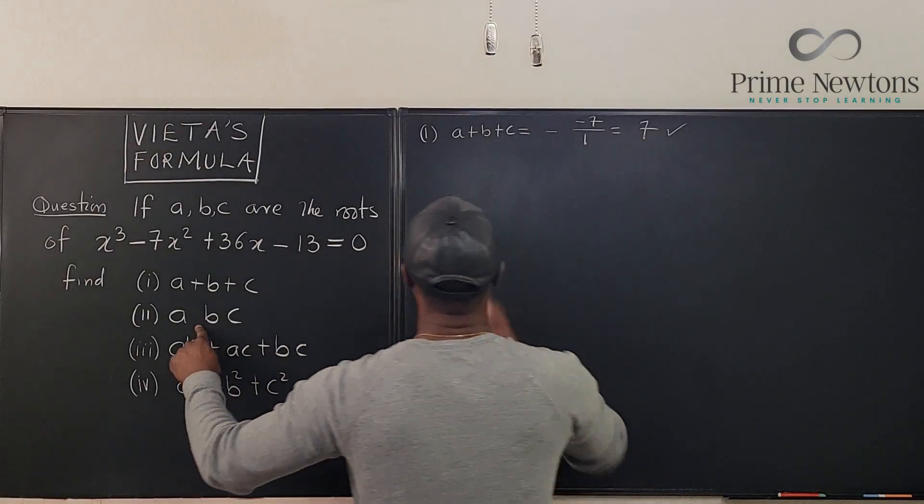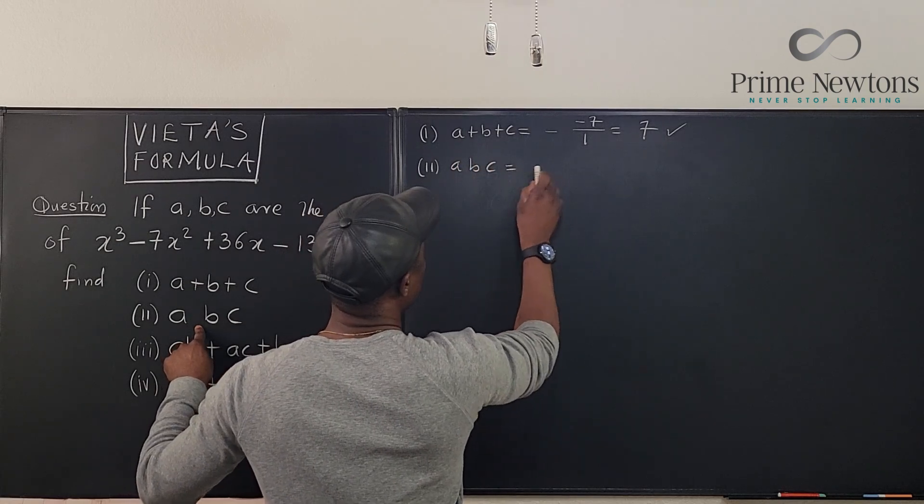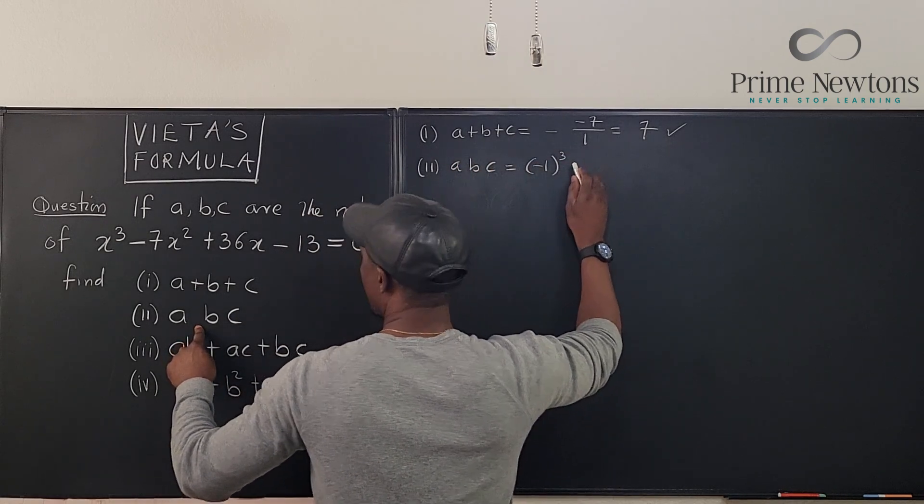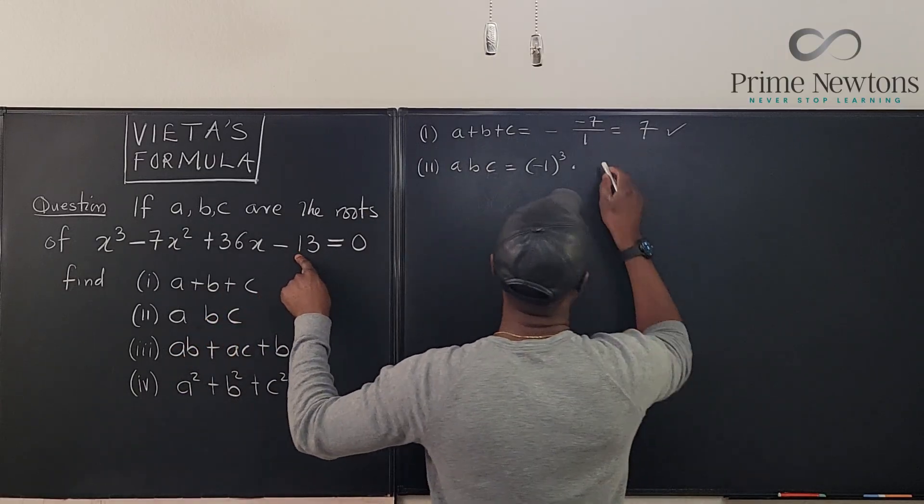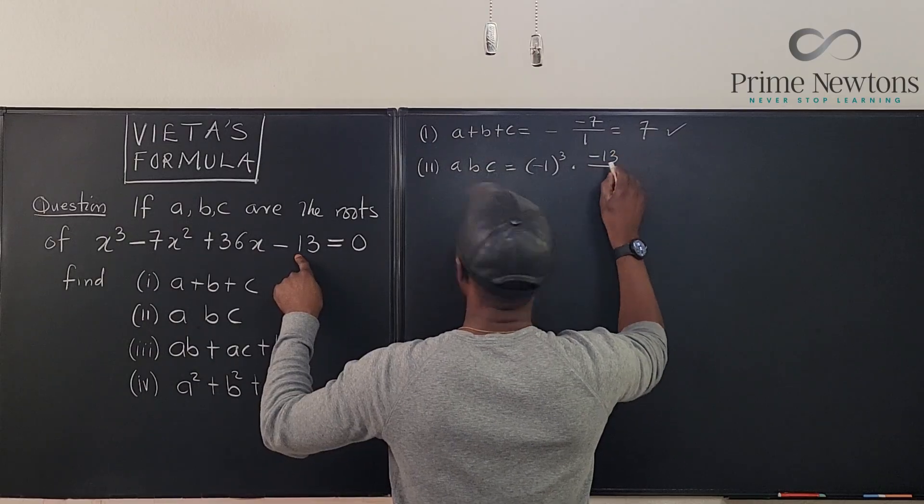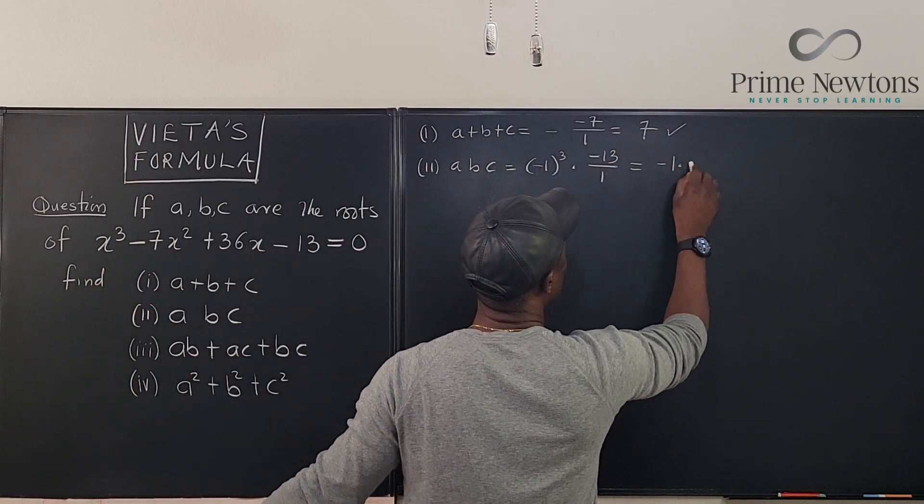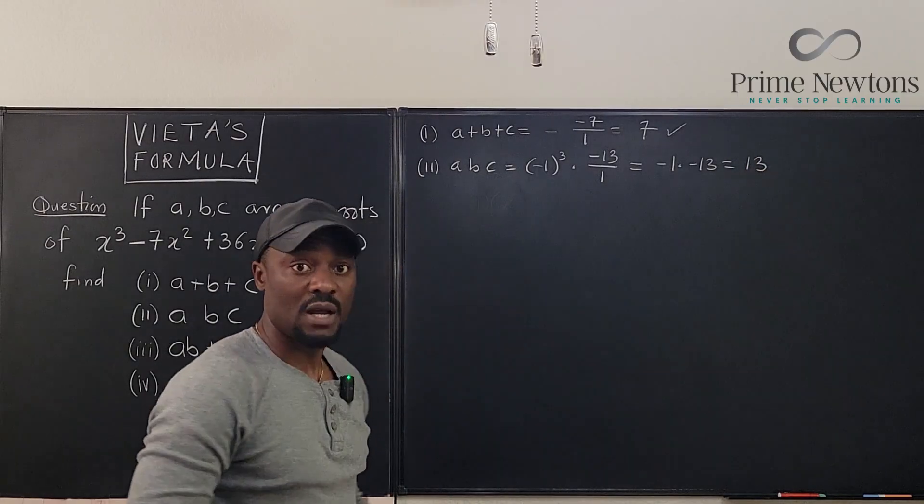Second one is the product. I think we know the answer to that too. ABC is equal to negative 1 raised to power 3 times a naught, what is going to be minus 13 divided by 1. So that's going to be minus 1 times minus 13, which is 13. We're done with the product.